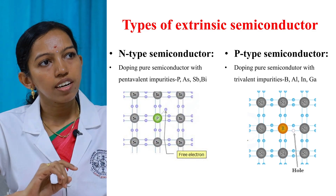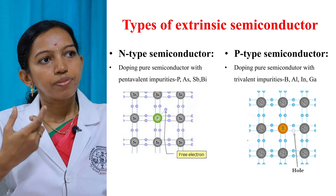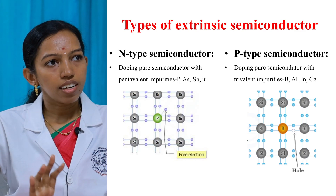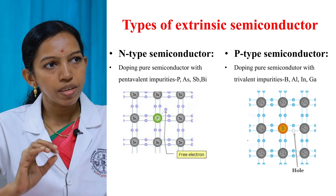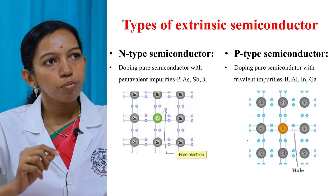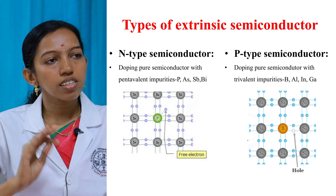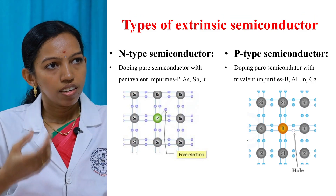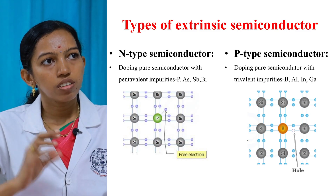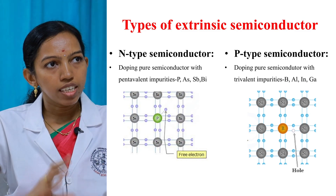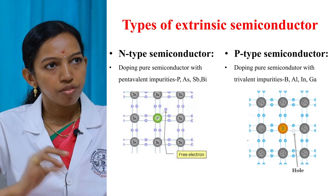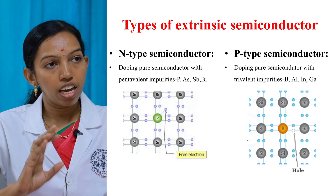In this figure, the silicon crystal structure is shown in which a silicon atom is replaced by a pentavalent impurity, that is phosphorus. This results in the release of an extra free electron. So in N-type semiconductor, the majority charge carriers are electrons.